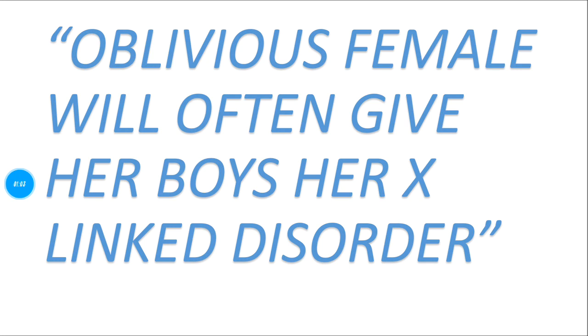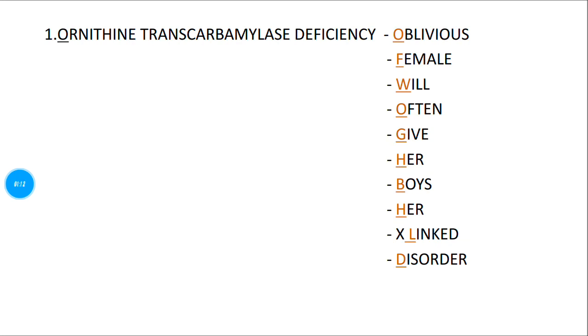The mnemonic is: 'Oblivious female will often give her boys her X-linked disorder.' This is the mnemonic for X-linked recessive disorders. I have underlined the key word for each disorder matched to the mnemonic.